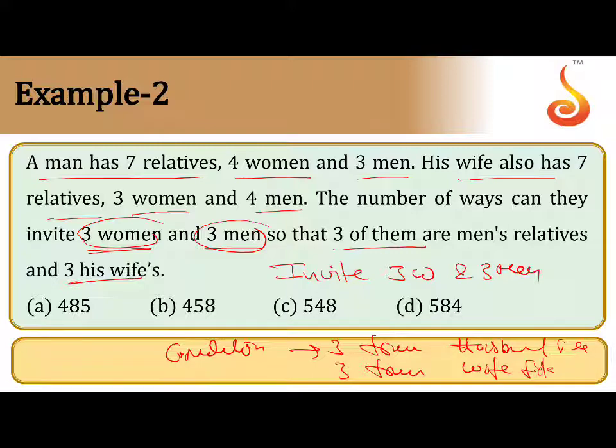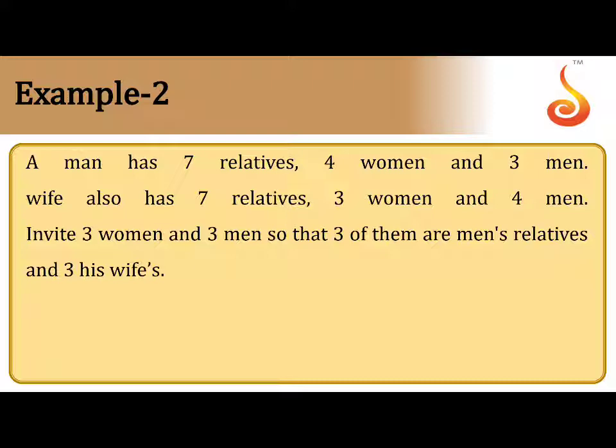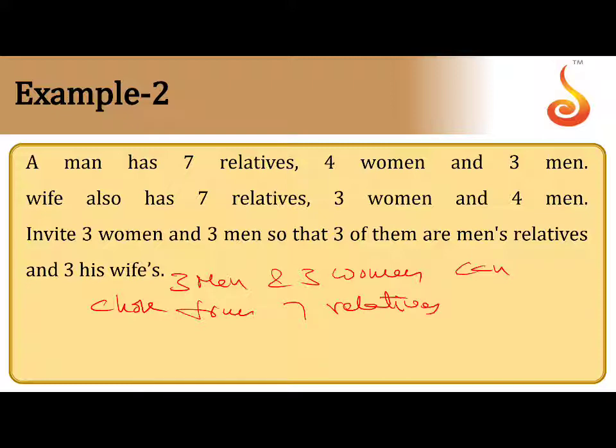That is the data which you want here. So now you can select. Now what you can add is 3 men and 3 women can choose from 7 relatives, 7 relatives of husband and 7 relatives of wife in the following table. Table shows.